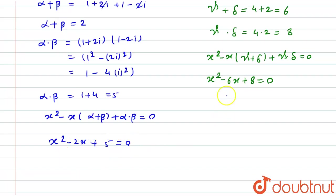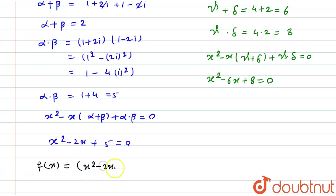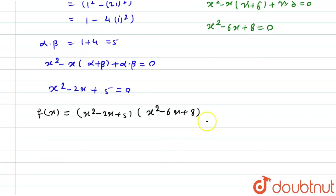Now if we multiply both equations, we get the required polynomial. So the required polynomial f(x) equals (x squared minus 2x plus 5) multiplied by (x squared minus 6x plus 8), and we equate this to 0.